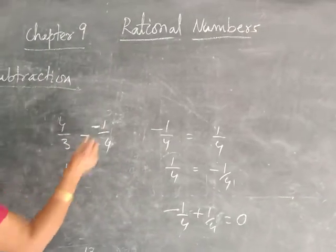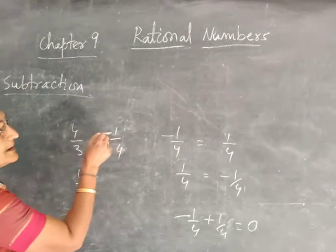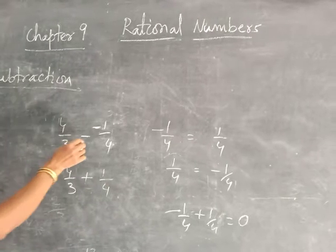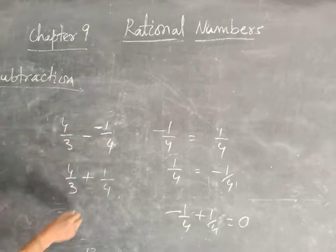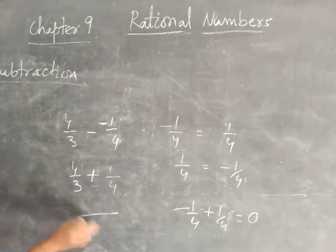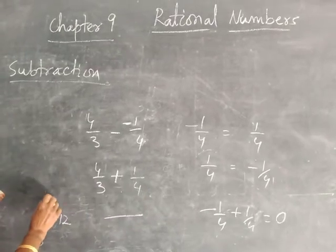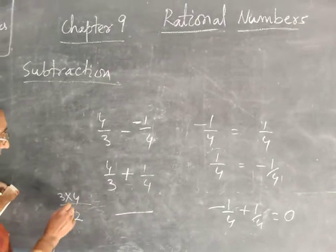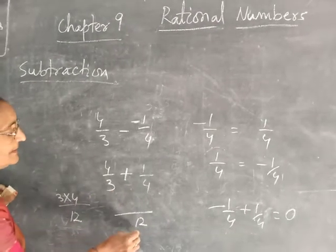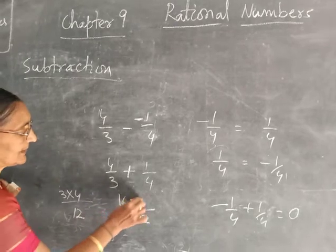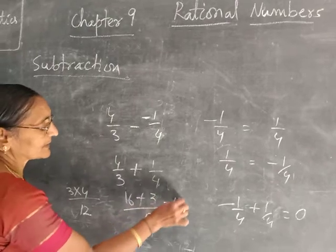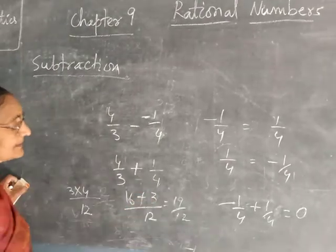Here also, you have to change using the additive inverse of minus 1 by 3 — minus into minus becomes plus. So you take the LCM of 3 and 4, which is 12. Divide LCM by denominator: 12 by 3 gives 4, and 4 into 4 is 16. Plus: 12 by 4 gives 3, and 3 into 3 is 9. So it comes 16 plus 3 over 12, which is 19 by 12.